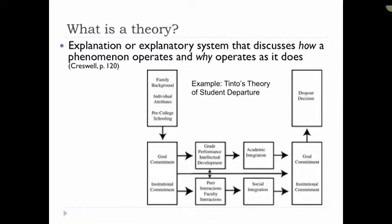So essentially Tinto theorized that people come into college with a lot of background factors and different levels of motivation and cognitive assets. But really what matters when they enter the social world of college is both the degree to which they become academically integrated and socially integrated in the college setting. And then that level of academic and social integration contributes to their decision whether or not to stay in that larger social college context or to drop out. All of these different factors together contribute to the how and why of college students dropping out of college.